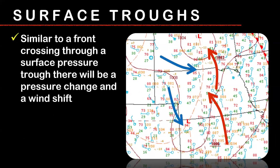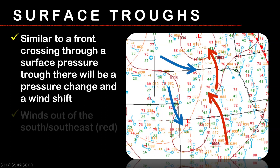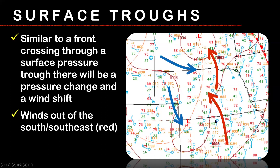Similar to a front, a surface pressure trough is a situation where you'll have convergence. You can see here that the winds are essentially out of the southeast or south on the east side of this pressure trough, and up here the winds are more out of the west or northwest — very similar to what you see in a frontal system. That's where you see the air is going to be converging.